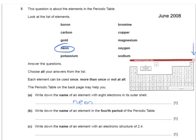Write down the name of an element in the 4th period of the periodic table. The 4th period is the row beginning with potassium and calcium. We have a look along there — well, there is potassium, so that will do. Copper is also in that period, and bromine is also in that period as well, so any of those would do.